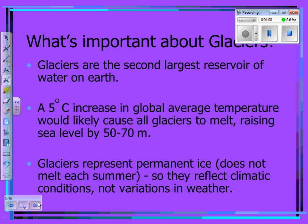What's important about glaciers? They're the second largest reservoir of water on earth, and from the video we watched today, you'll know that 75% of the earth's fresh water comes from glaciers. A 5% increase in global average temperature would likely cause all the glaciers to melt, raising sea level around the world by 50 to 70 meters.